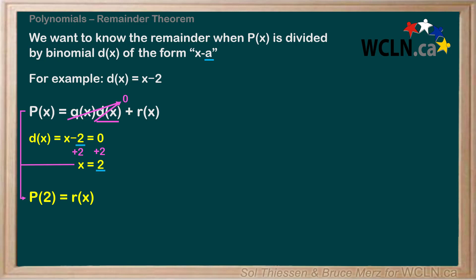This can be generalized to lead us to the Remainder Theorem, which says that the remainder due to the division of a polynomial P(x) by a divisor d(x) of the form x minus a is equal to P(a). Remember that P(a) just means the polynomial evaluated at x equals a.